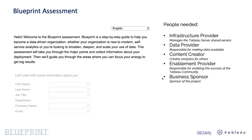We aim for five profiles, as you see on the right side of this slide: the infrastructure provider, the data provider, the content creator, the enablement provider, and the business sponsor. These are the five key profiles to make sure that we learn everything about your current installation or environment. We walk through a list of questions — not questions about how much percent of a task is completed, but text-based questions with text-based answers.